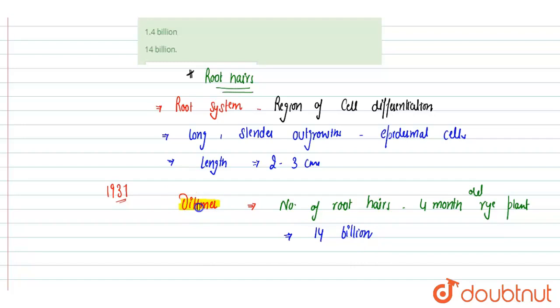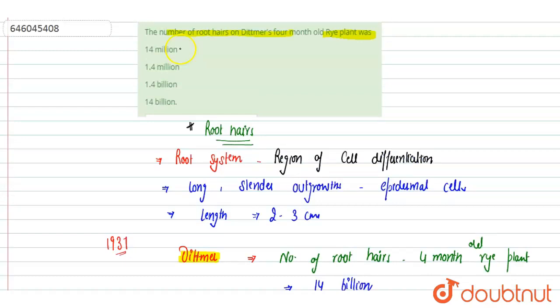Because Ditmer was the scientist who determined this. So here we can see the options given: 14 million is incorrect, 1.4 million incorrect, 1.4 billion incorrect, 14 billion option D is correct. Hope you get it, thank you.